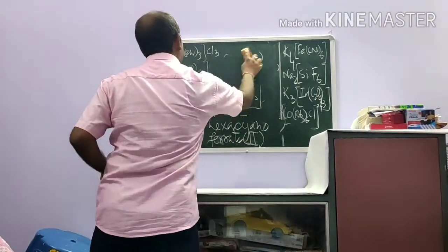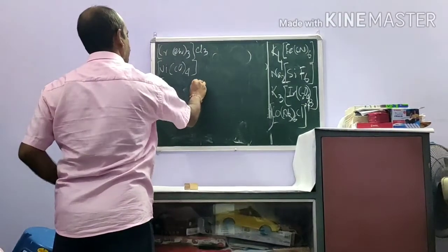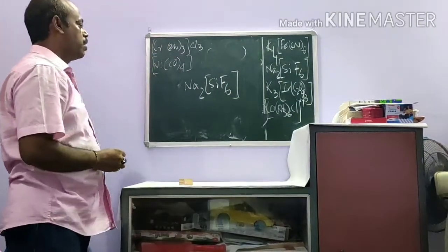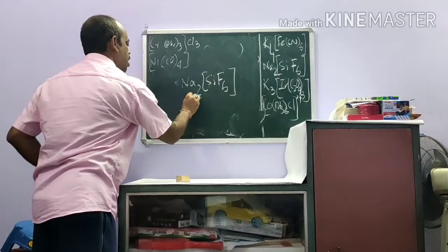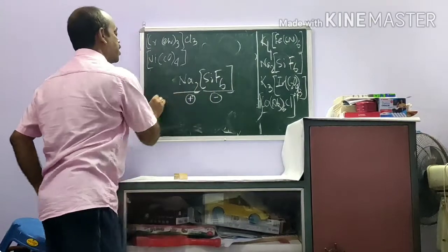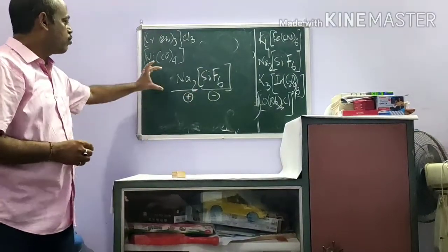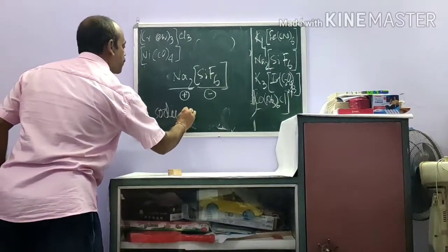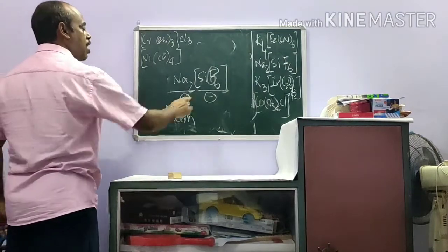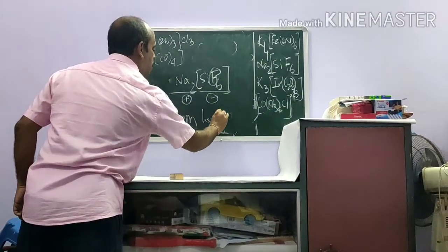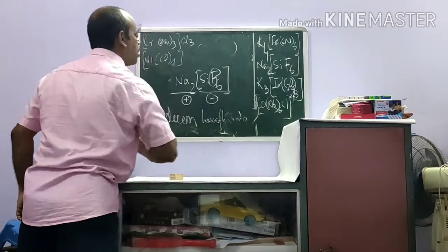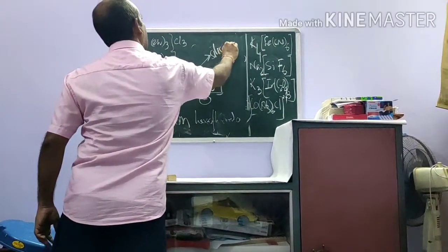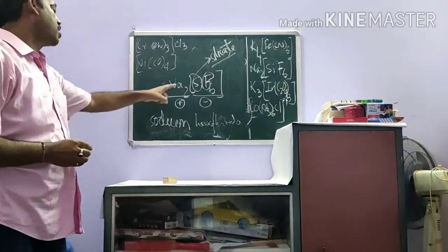Next, let us take another example: Na2[SiF6]. Again, the ionization sphere is positive (sodium) and the coordination sphere is negative. We start with the positive part: sodium. F is known as fluorido. There are 6, so it is hexafluorido. Then silicon in the negative sphere is named as silicate. So the name so far is: sodium hexafluoridosilicate.